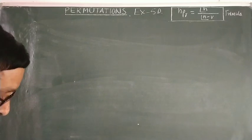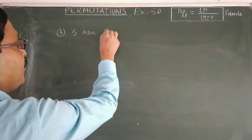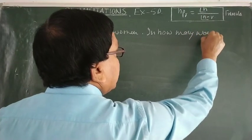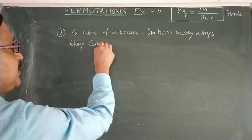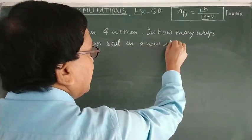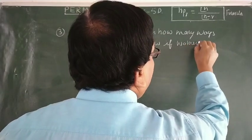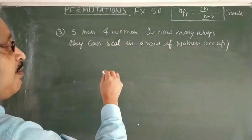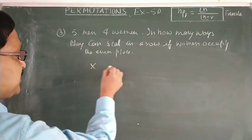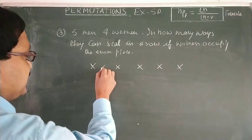Next question: 5 men and 4 women are to sit in a row such that the women occupy the even places. There are 5 places reserved for men and the even places — 2nd, 4th, 6th, and 8th — are reserved for women.